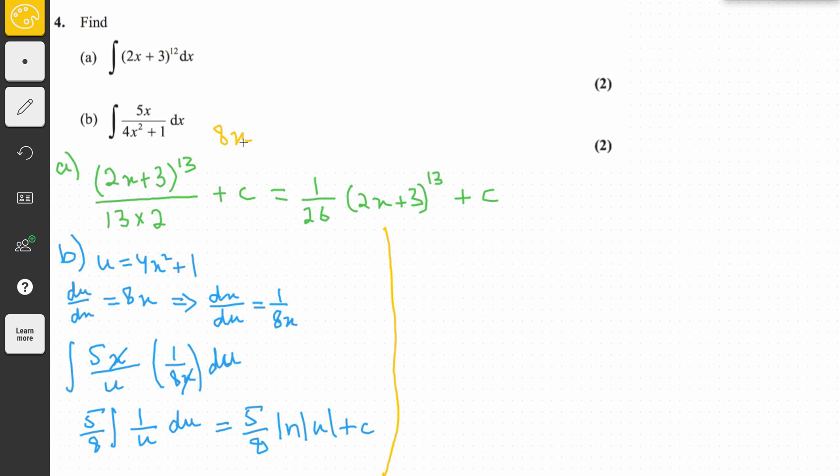So that means that we can use this method. What we do is we can multiply 5x by 8/5 to get 8x, and that's what we want in the numerator. So since we're multiplying it by 8/5, we have to divide it by 8/5 as well, and that means I'm just going to multiply it by 5/8. So 5/8 integral of 8x, we found this 8x by using this, and then divide that by 4x² + 1 with respect to x.